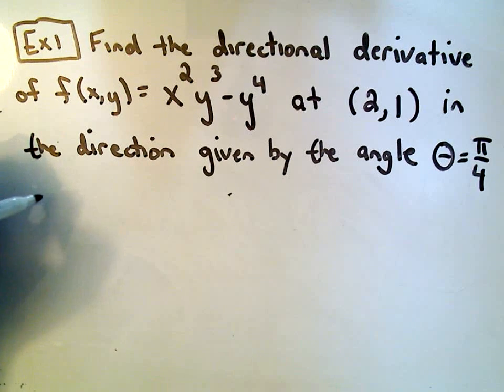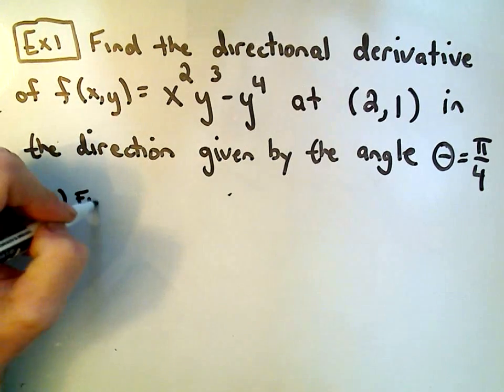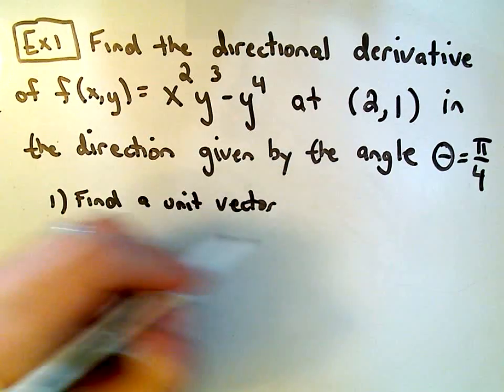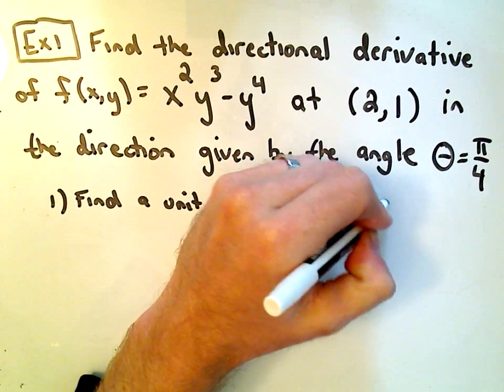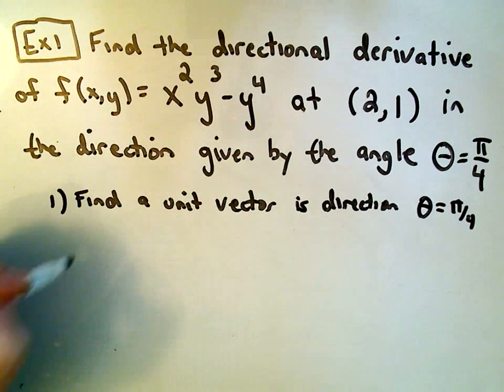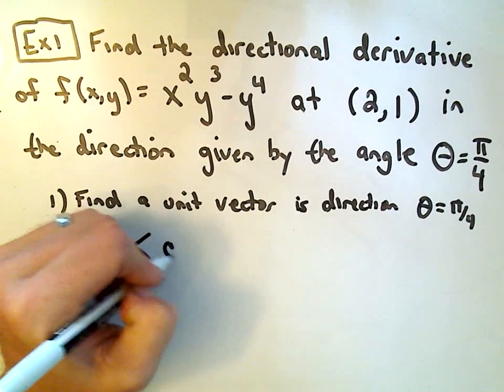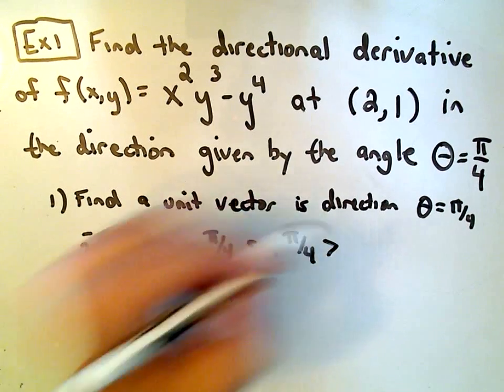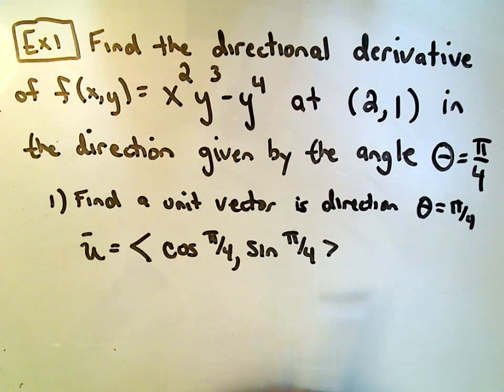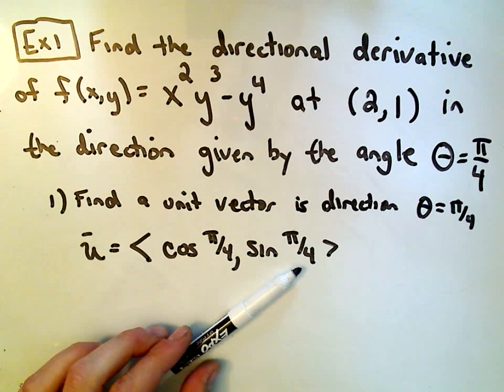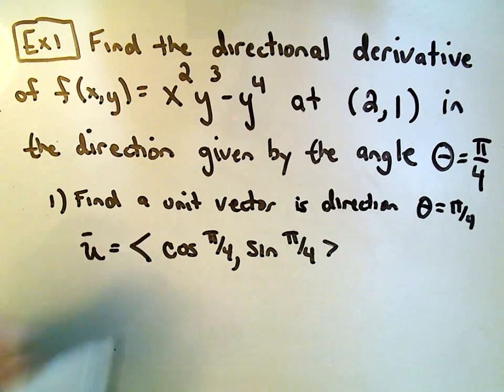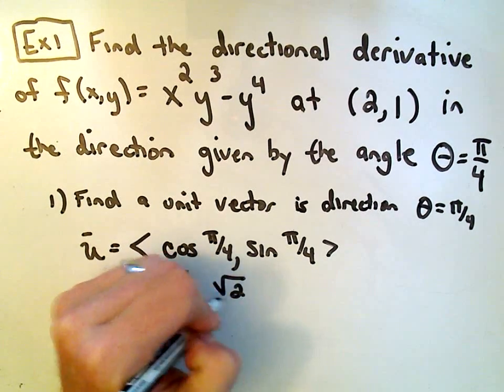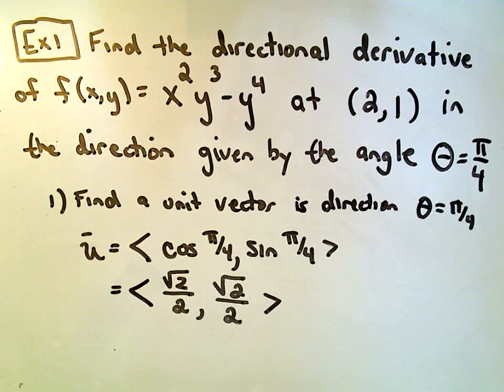Okay, so the first thing, it doesn't really matter the order you do it, but one thing you have to do is find a unit vector. We have to find a unit vector in the direction that corresponds to the angle θ = π/4. Remember to do this, we can just take cosine of π/4 and sine of π/4. That'll give us a unit vector. A unit vector is a vector of length 1 in the direction that corresponds to the angle π/4. We know that cosine of π/4 is √2/2. Likewise, sine of π/4 is √2/2. Alright, well now I've got my unit vector.